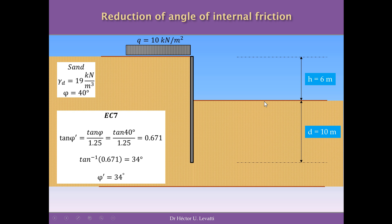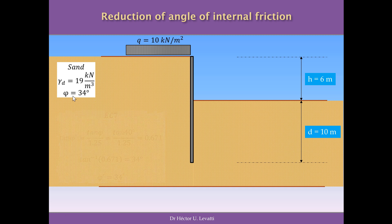Going back to our problem, following Eurocode we must reduce the angle of internal friction. Originally it is 40 degrees. The reduction is applied to the tangent, not the angle directly, so we divide the tangent of 40 degrees by 1.25 to get the tangent of the new reduced angle. Applying the inverse tangent, the new angle of internal friction is 34 degrees — a reduction of 6 degrees. This is the value we will use in our calculations.